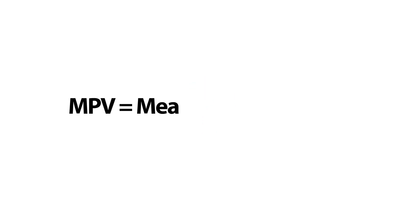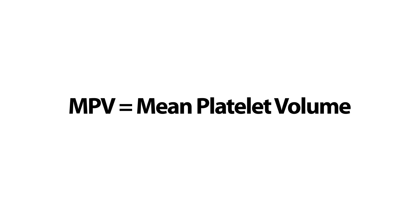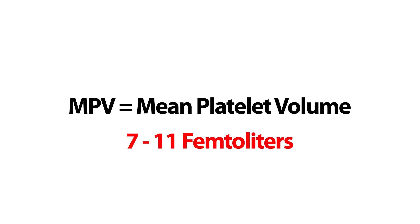MPV stands for mean platelet volume, which means the average volume of a platelet found in the circulation. The normal range of MPV is about 7 to 11 femtolitres.